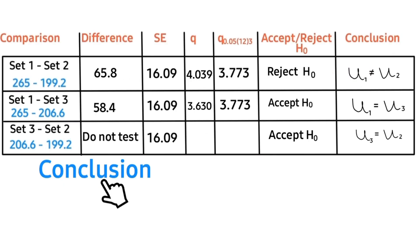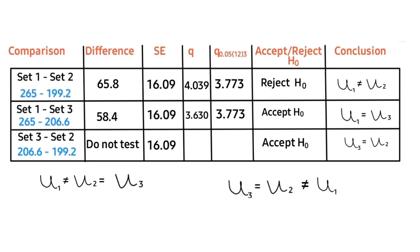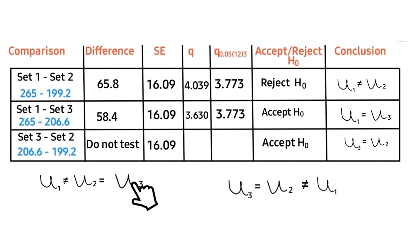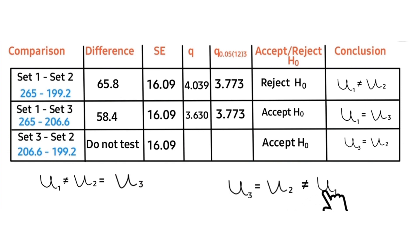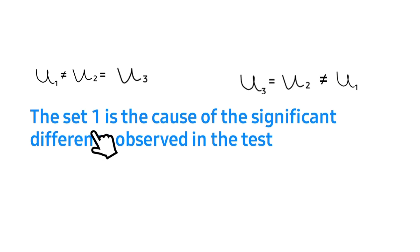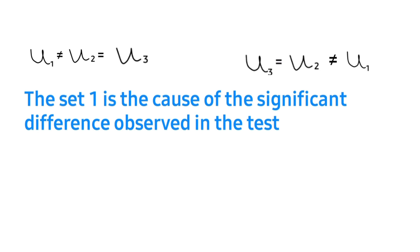The last step is to draw an overall conclusion: the population mean of Set 1 is not equal to that of Set 2, while the mean of Set 2 is equal to that of Set 3. The population mean of Set 3 equals that of Set 2, but Set 2 is not equal to Set 1. Therefore, Set 1 is the cause of the significant difference observed in the ANOVA test. I hope this video is helpful — stay tuned for the next video on two-way ANOVA numerical problems.